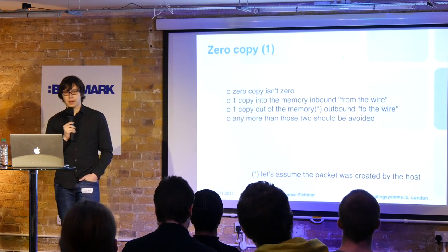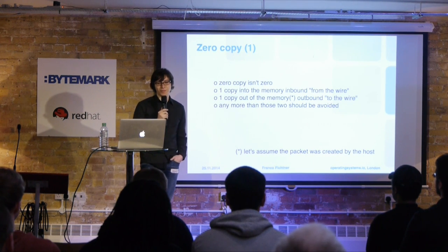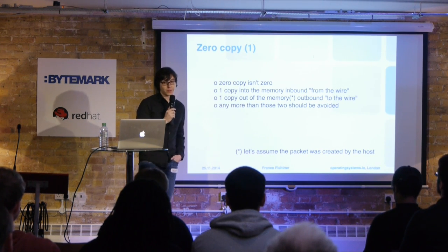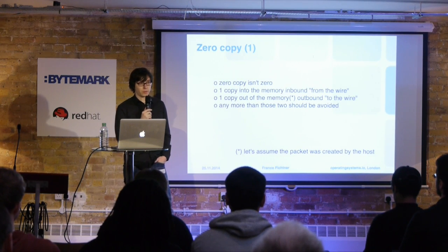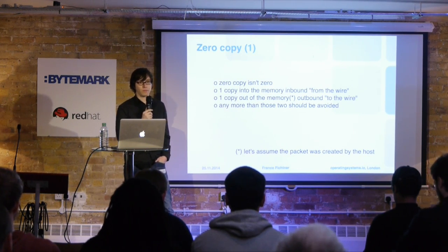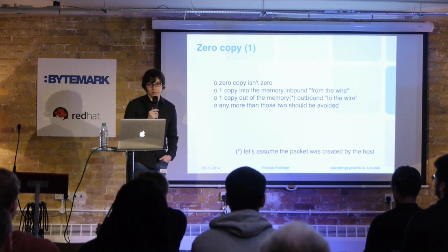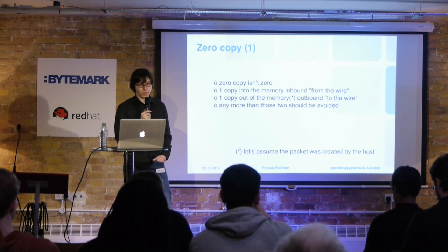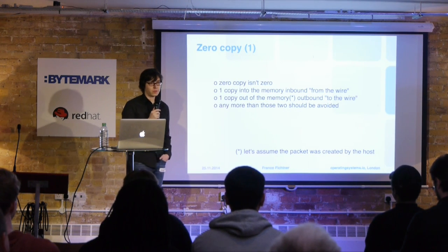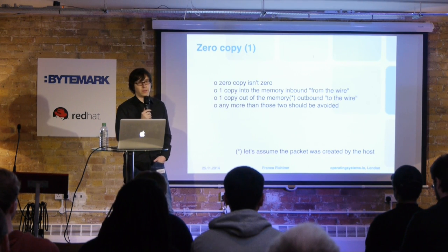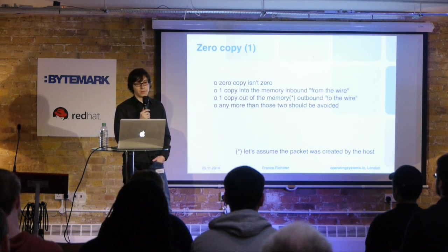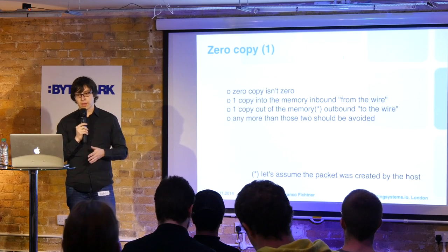There's the concept called zero copy — everybody talks about it, but it's really not zero copy if you look at it from the outside. You always end up with at least one copy into memory from the network card, from maybe another virtual machine or user space. In forwarding scenarios, if you assume the packet was touched or created, you always end up with two memory copies. Two copies is okay, but anything more than that is not good.